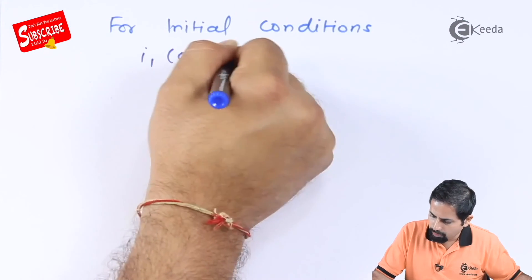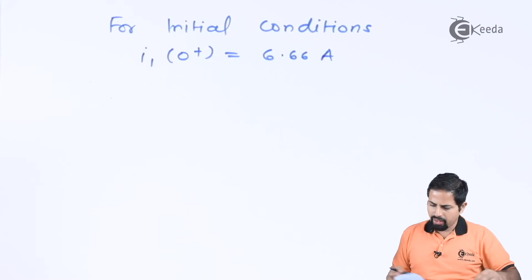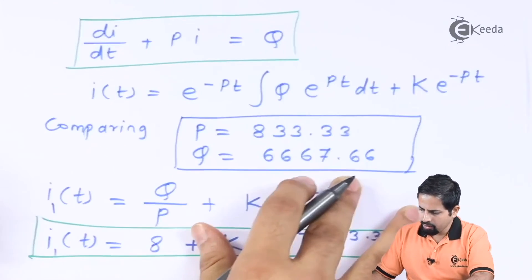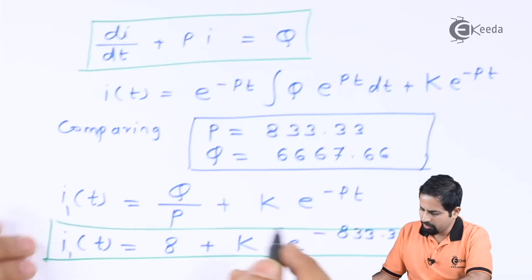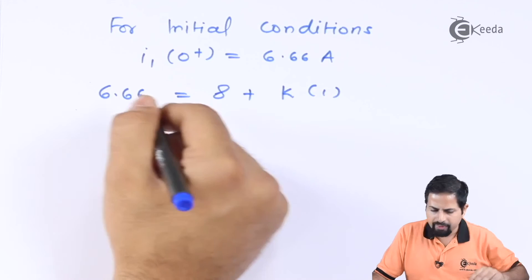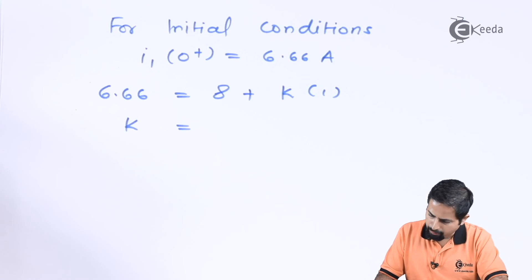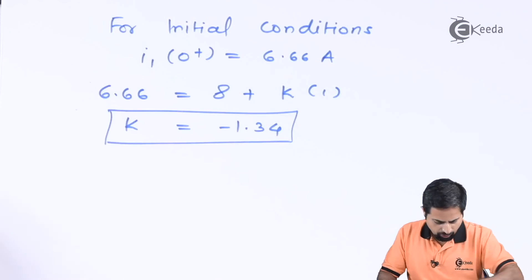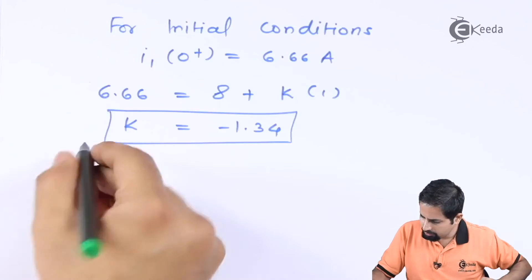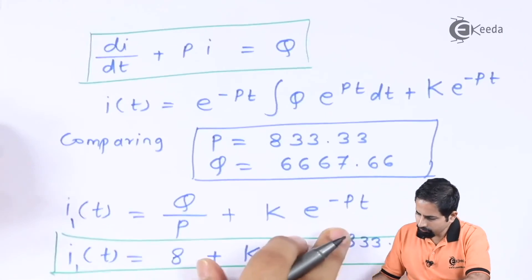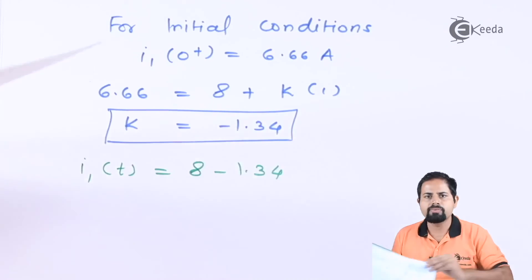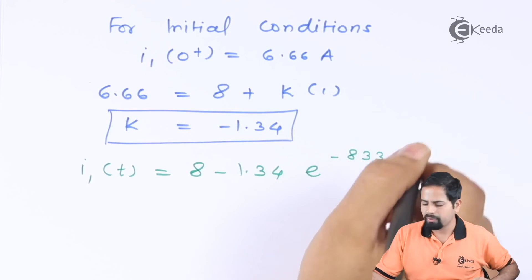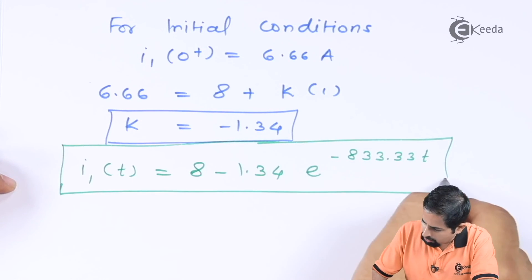With K = −1.34, the particular solution for I1(t) is: I1(t) = 8 − 1.34·e^(−833.33·t) amperes.